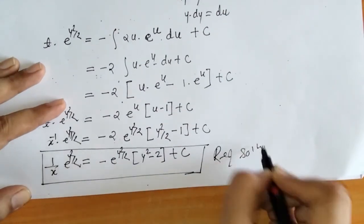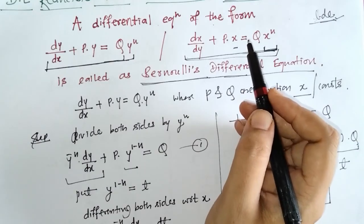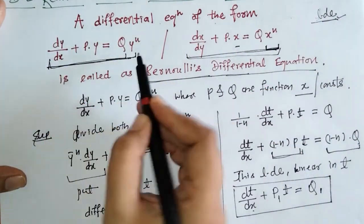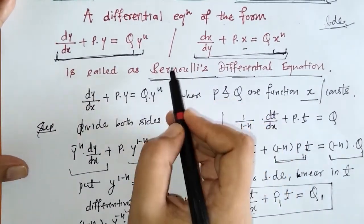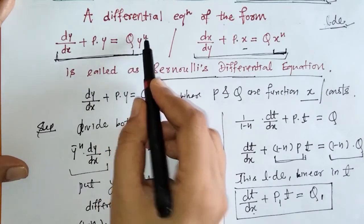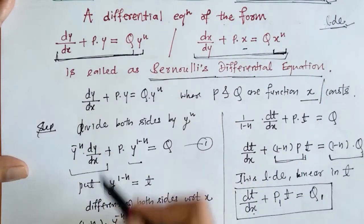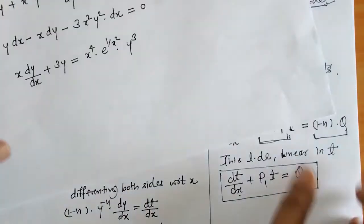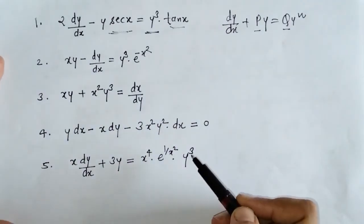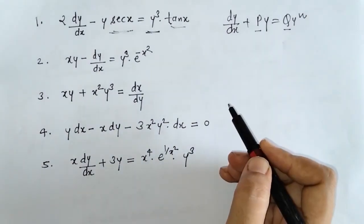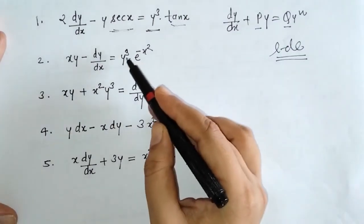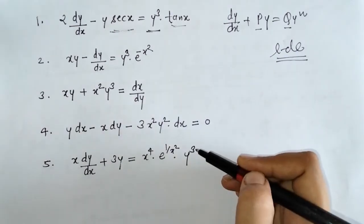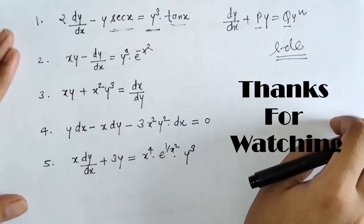So we got the solution of this given differential equation. In this way we find solutions of Bernoulli's differential equations. When we have a Bernoulli's differential equation, we reduce it to a linear differential equation by dividing by y raised to n or x raised to n depending on the form, and then proceed to solve the linear differential equation. Here we have some remaining examples — all are Bernoulli's differential equations — try them out by yourself. If you face any difficulties finding the solution, feel free to ask in the comment section. Thank you.